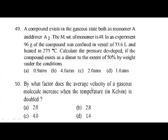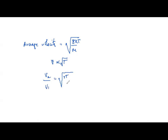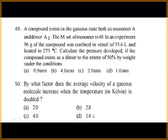Next question: by what factor does average velocity of a gaseous molecule increase when temperature in Kelvin is doubled? Average velocity V̄ = √(8RT/πM), so V ∝ √T. V₂/V₁ = √(2T/T) = √2 = 1.41. The correct answer is 1.41.